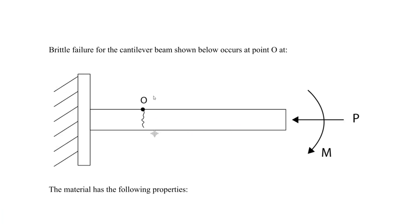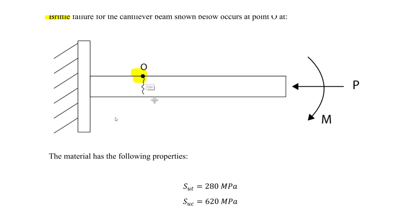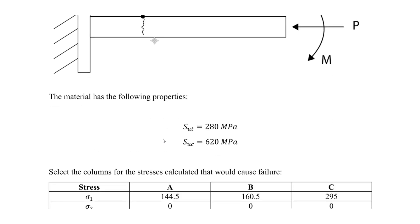Going back to our question: we're told brittle failure for the cantilever beam shown occurs at point 0,0. We can see cracking in the vertical direction, which is typical of brittle tensile failure. The material has the following properties: S_UT is the ultimate tensile strength, and S_UC is the ultimate compressive strength. These are determined in the lab.